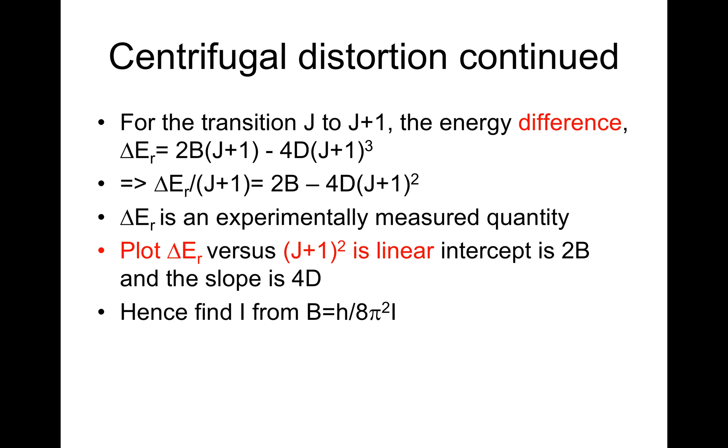Hence, we can find I from B equals h/(8π²I). Then, R, the internuclear distance for a diatomic molecule.